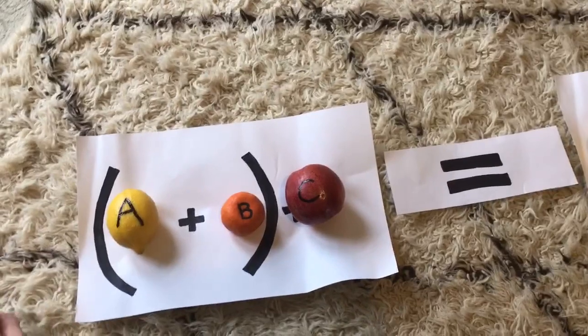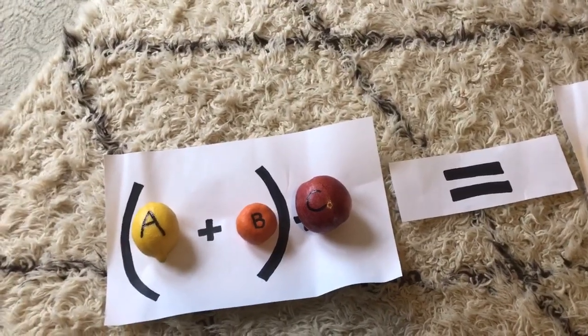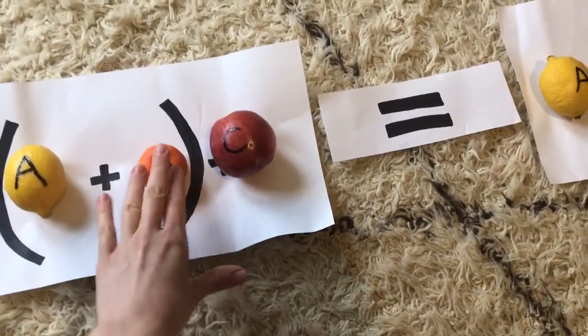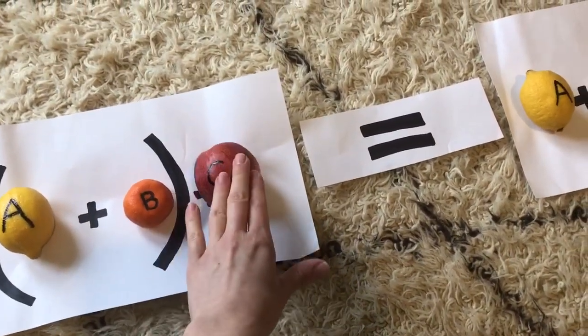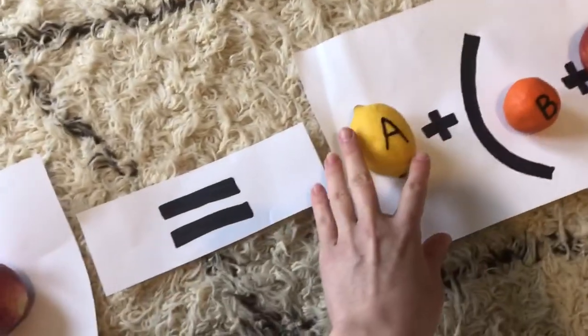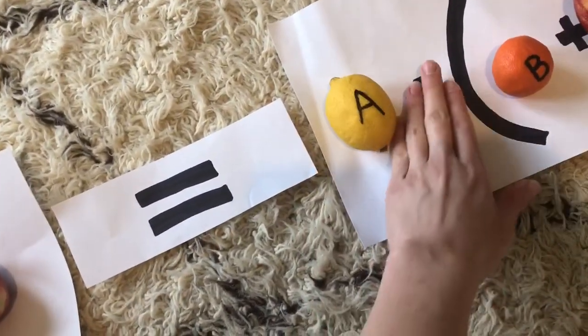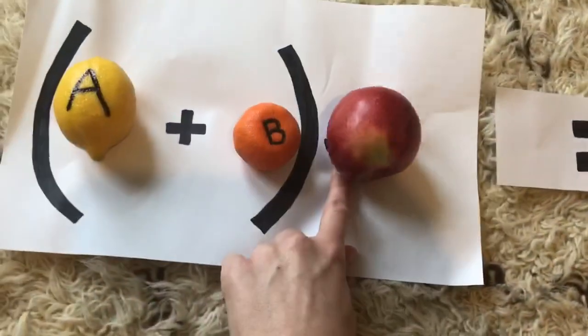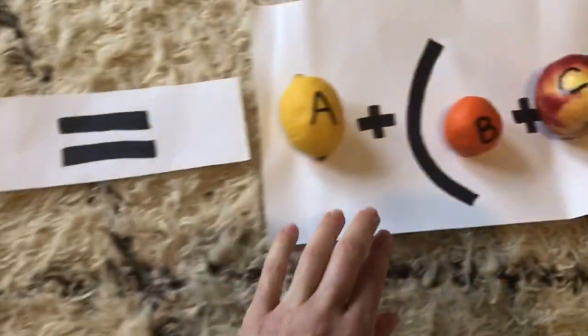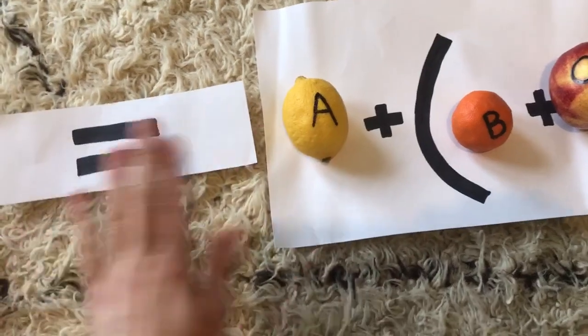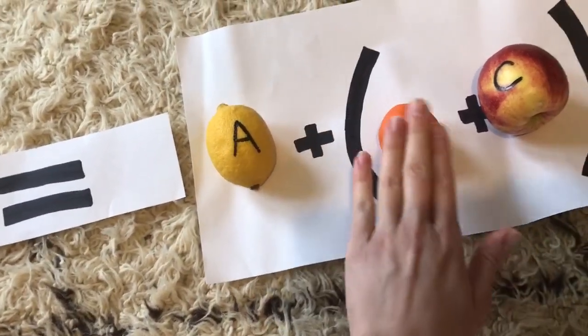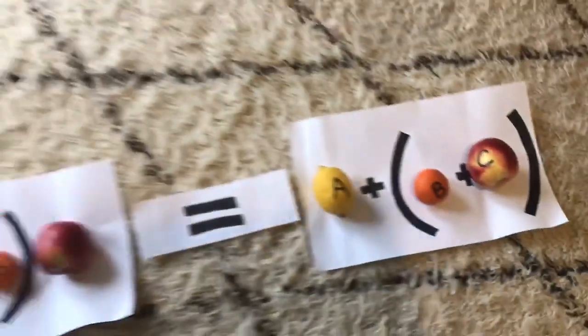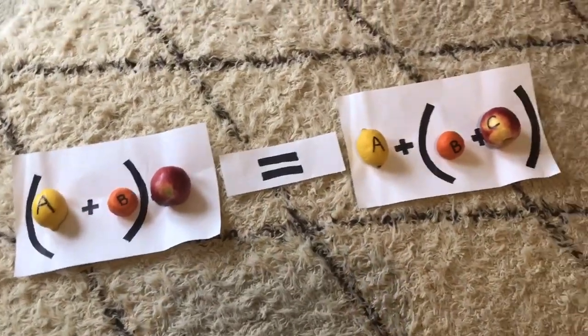The associative law for multiplication states parentheses A times B parentheses C equals A times, you would also need it for the, for the, you need two X's here, so equals A times parentheses B times C parentheses. The associative law.